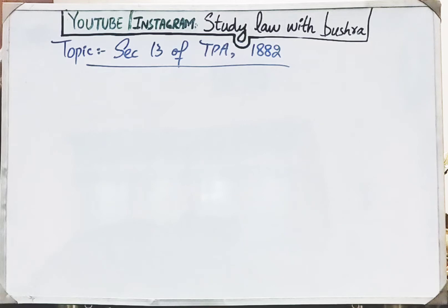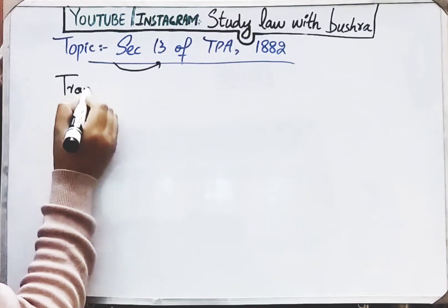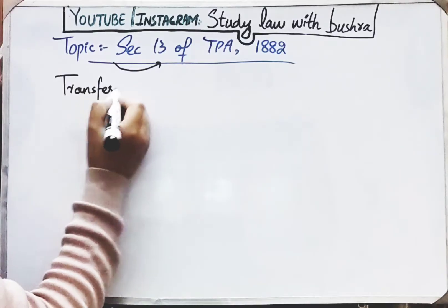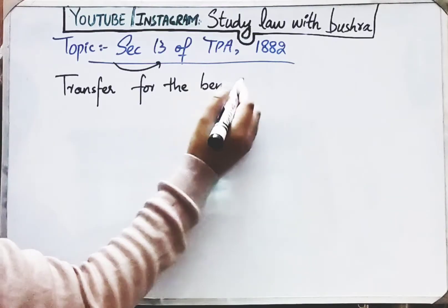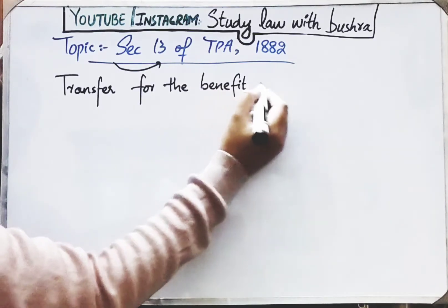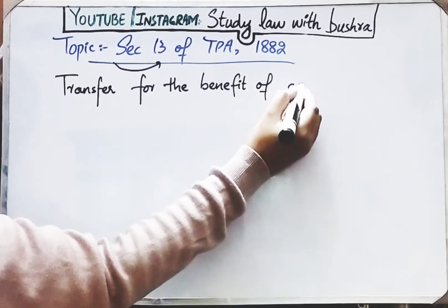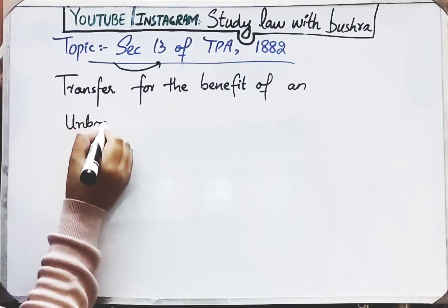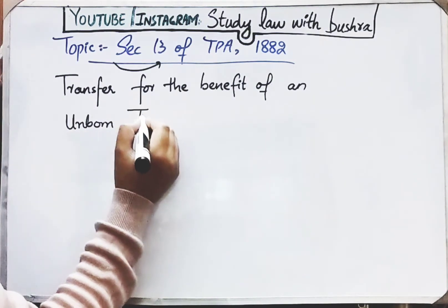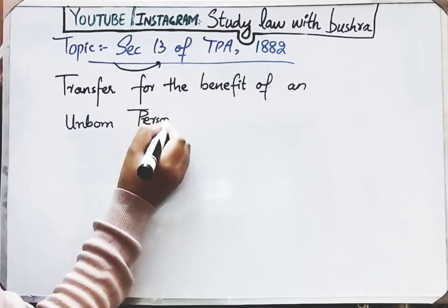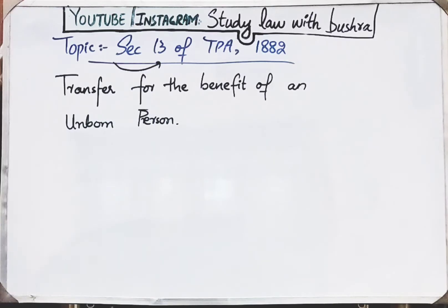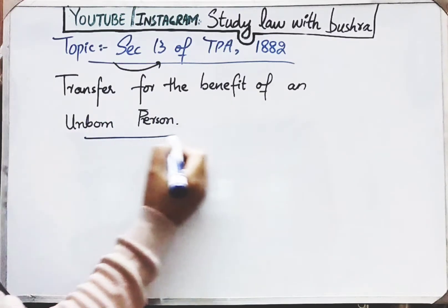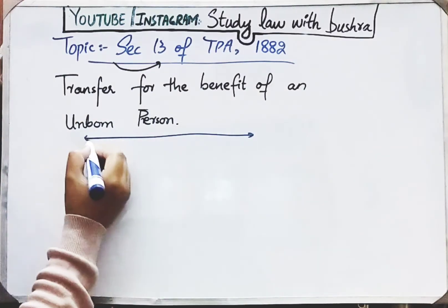Section 13 of TPA 1882 deals with transfer for the benefit of an unborn person. This title is a bit strange. It says transfer for the benefit of an unborn person. Now what is important to understand here is: what is an unborn person?